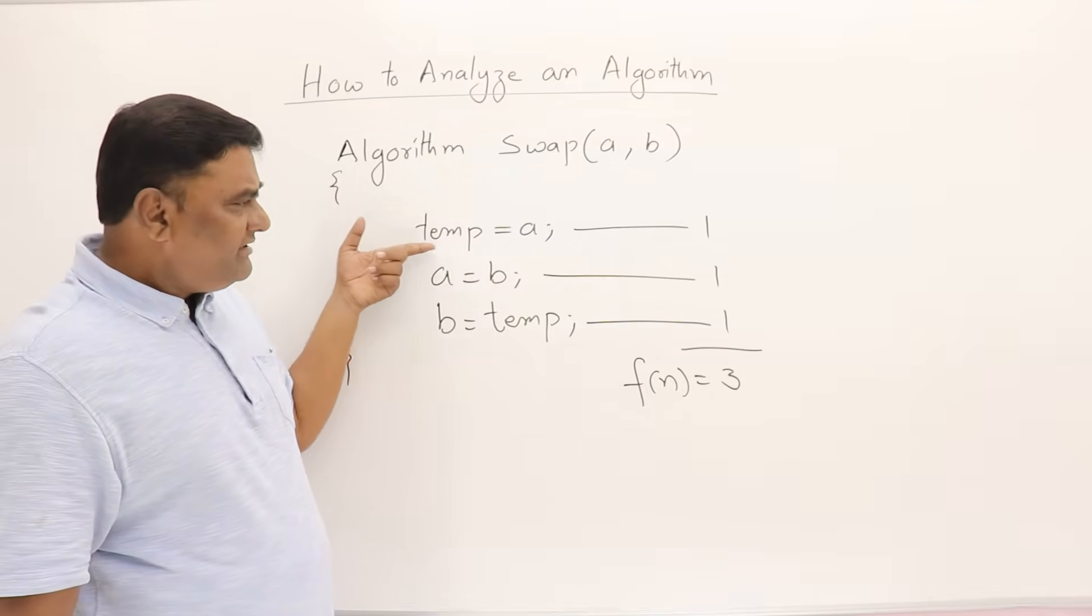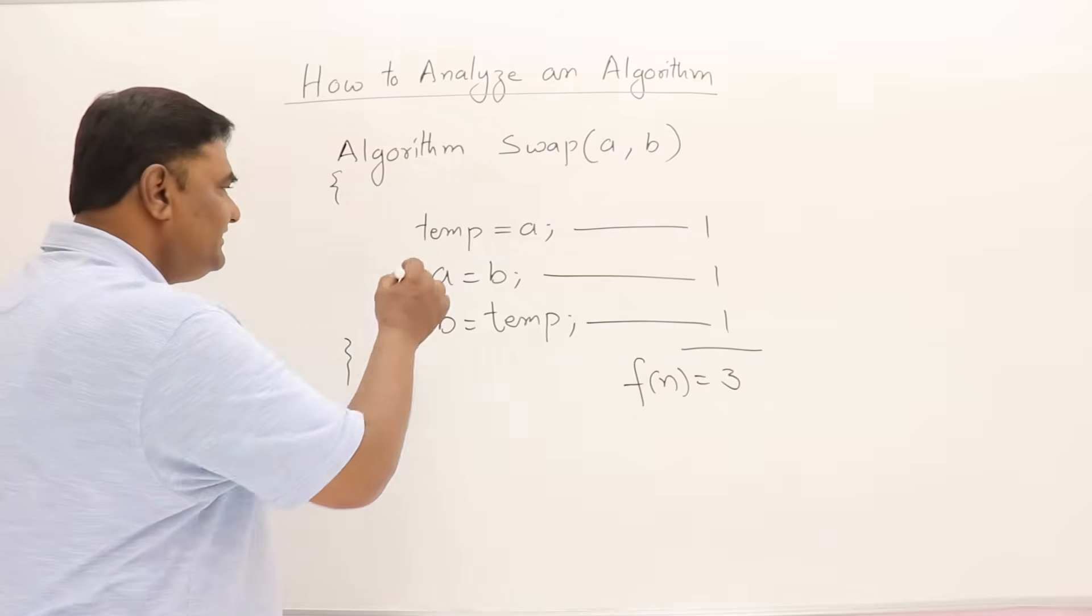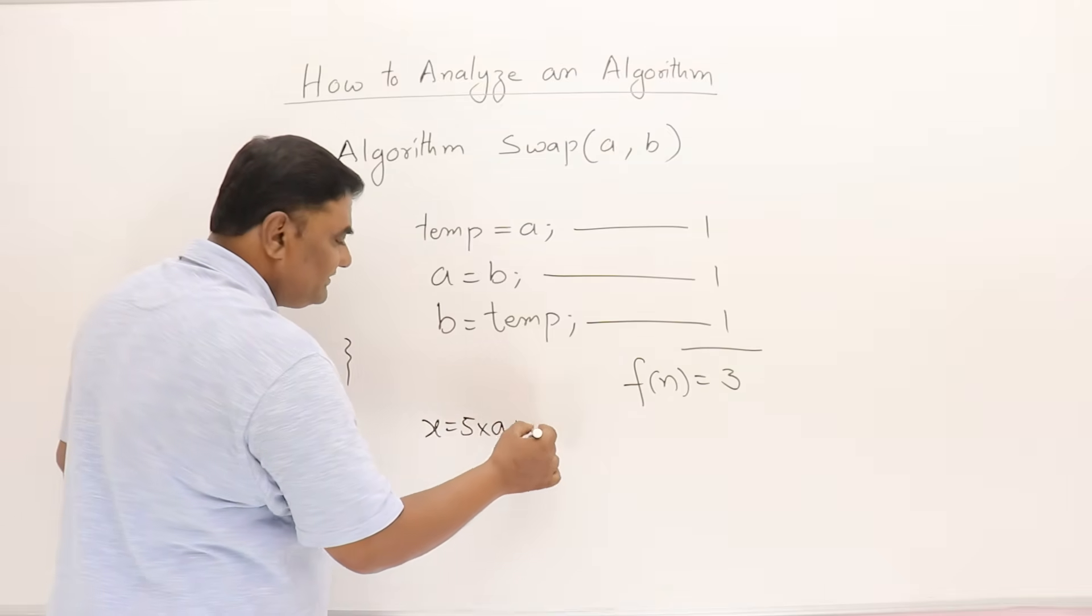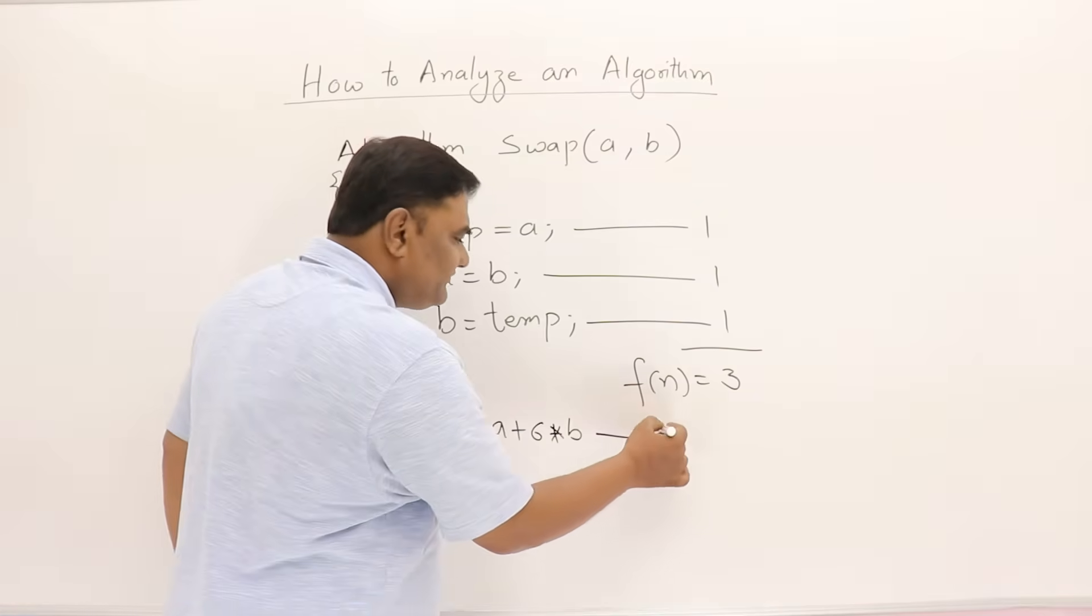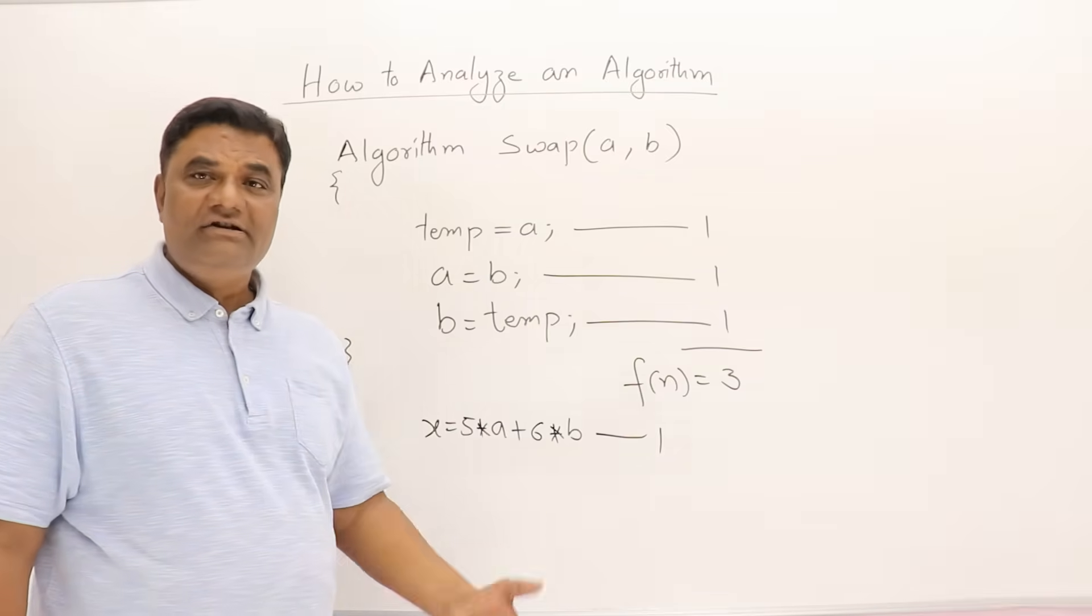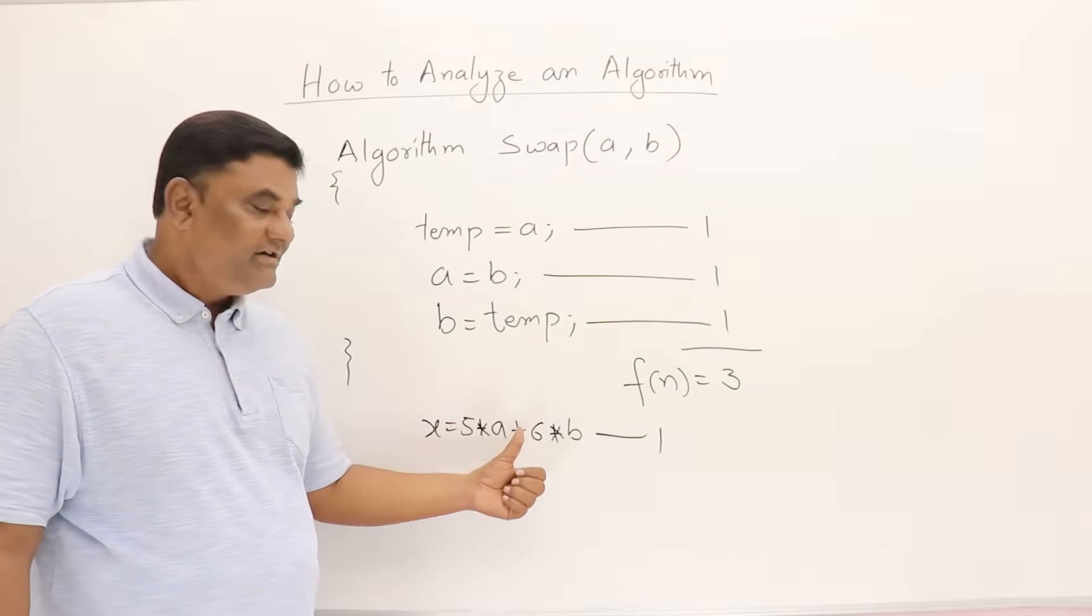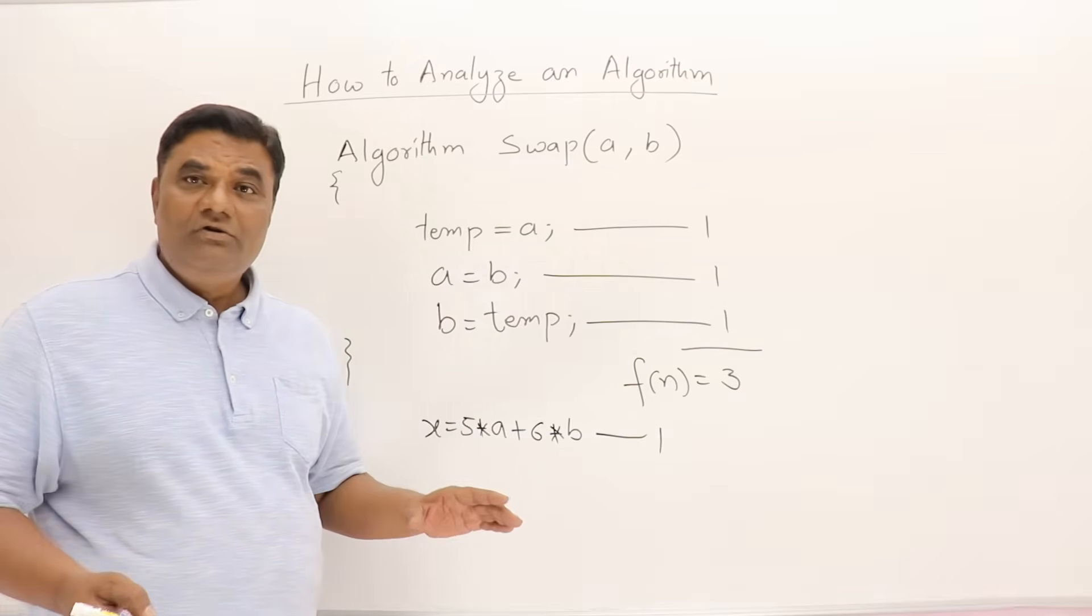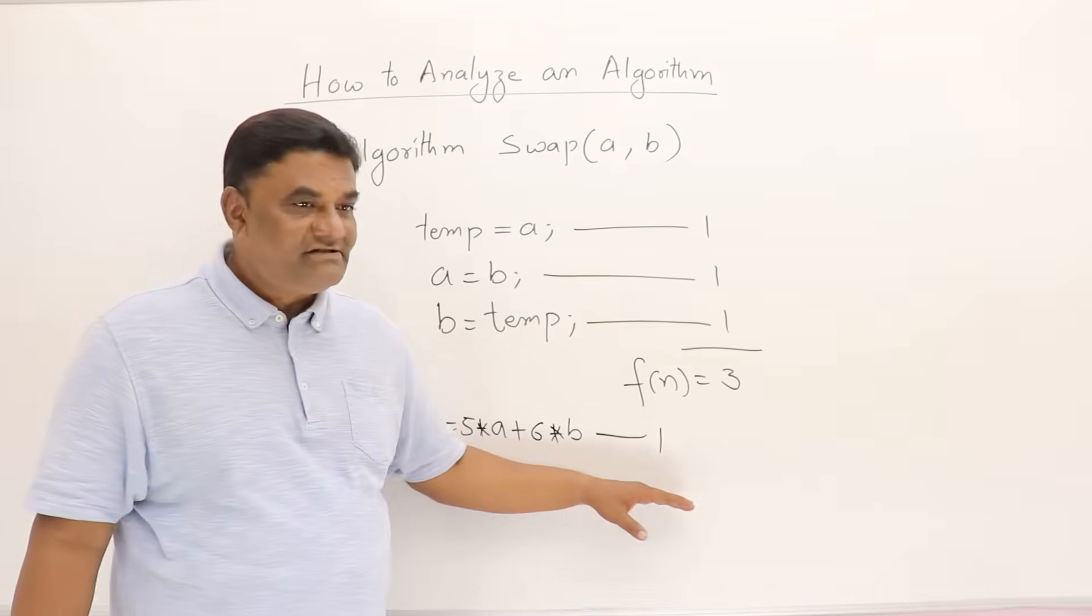Now here, whatever the complexity in the statement may be, how lengthy the statement will be, we say that it takes one unit of time. Let us assume instead of this statement I have some statement saying x = 5*a + 6*b. Then for this also we say it takes one unit of time. But really, if you see when you convert it into a program and finally when it gets converted into machine code, then how many statements it will have? For each multiplication, two statements, then for addition one statement, then assignment one statement—so total four statements will be there. But we don't want to go into that much detail. We simply analyze and say each statement takes one unit of time.